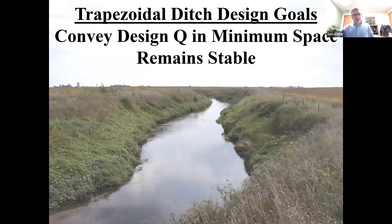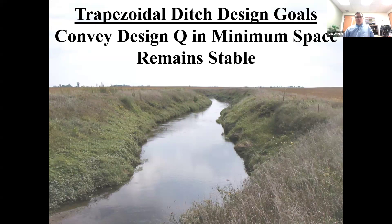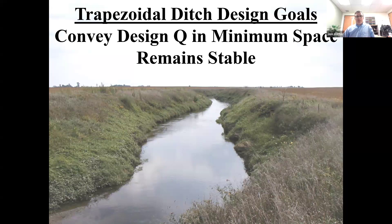Let's start with the traditional ditch design many of you are familiar with: the trapezoidal ditch design. From an engineering perspective, when drainage is the primary goal, it really is an elegant and efficient solution. That trapezoidal cross section really maximizes conveyance — you can move a lot of water in a minimal amount of space. There's only one cross-section shape that's better, but it's really difficult to construct. So this is about the best you can do in terms of draining and conveying water downstream. Another goal is stability — banks remaining stable, and the bed not aggrading or degrading.